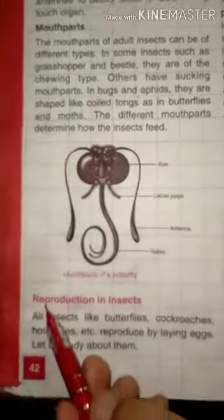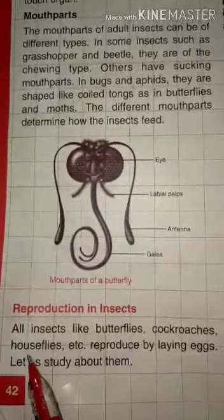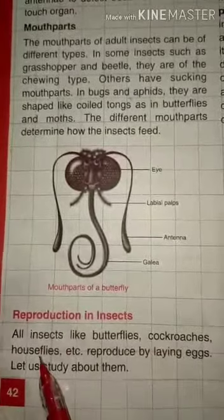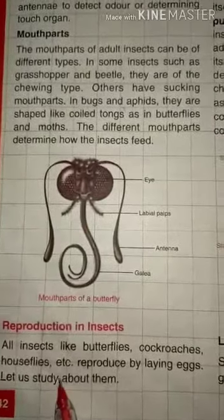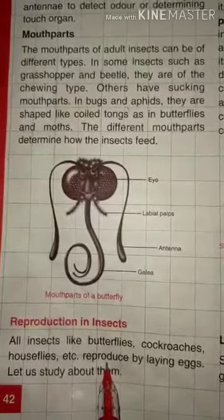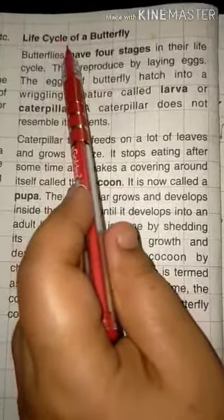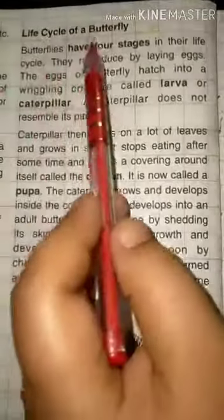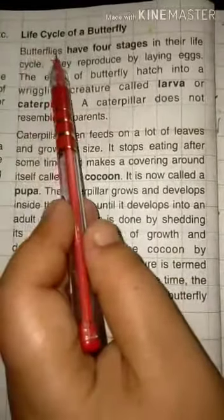Now we will know about reproduction in insects. All insects like butterflies, cockroaches, and houseflies reproduce by laying eggs. Now let's know the life cycle of the butterfly. Insects reproduce by laying eggs.